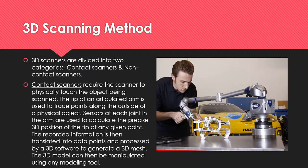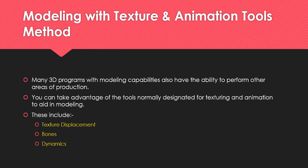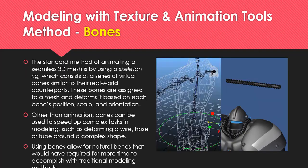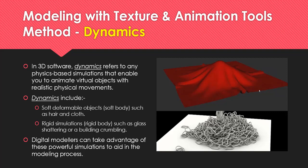The other one I want you to focus on is the Modeling with Texture and Animation Tools Method. Really read through this — understand what Texture Displacement is, how you model this kind of thing, what it's good for, how to use bones to model, and also Dynamics: what it's about, what the two categories are, and what objects are suitable to model using this method.